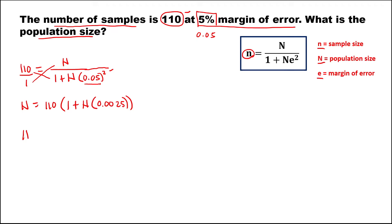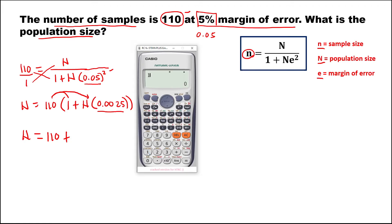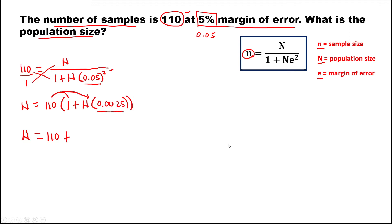Then we have N equals, you distribute 0.0025, so that's 0.275, so this is 0.275 times N.